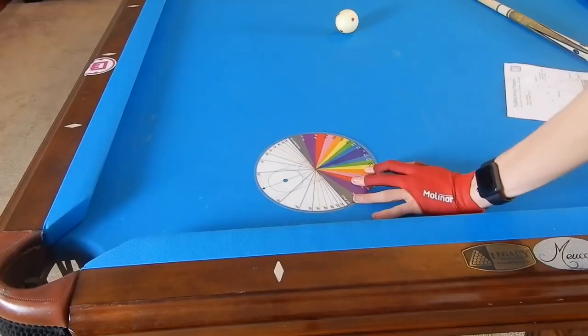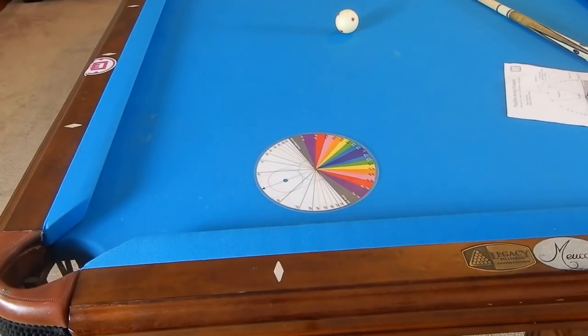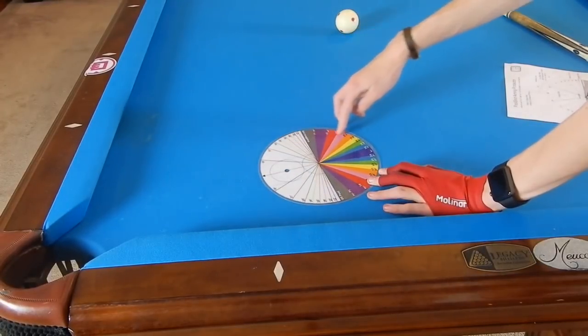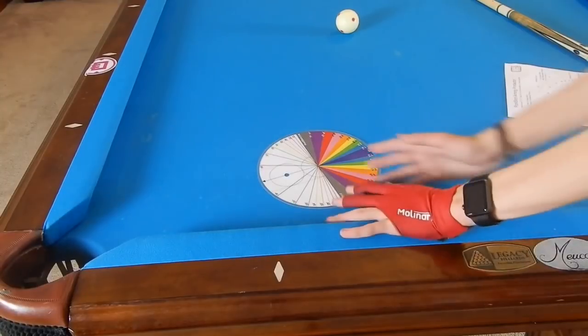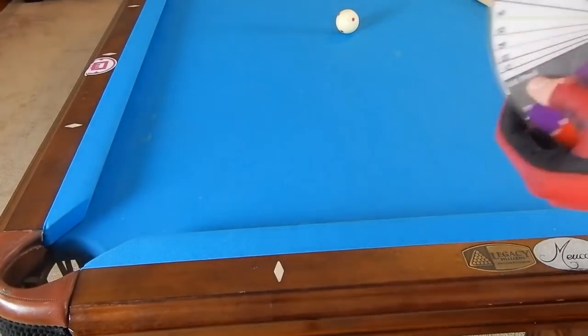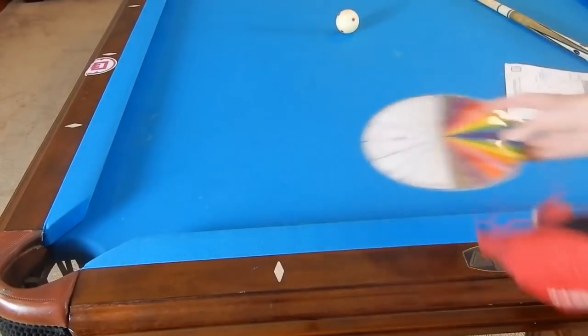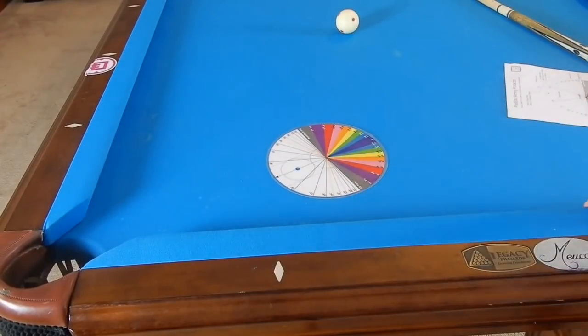This is called the follow zone. There's different degrees of follow - the lower you go on the cue ball, the lower it will go on the protractor. This is the cut angle, and obviously this is for US pool, so if you're playing snooker you need to get the snooker protractor from poolshot.org.